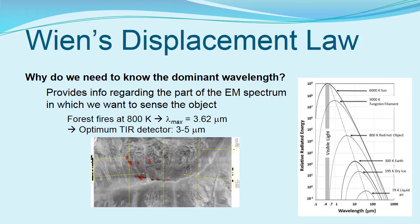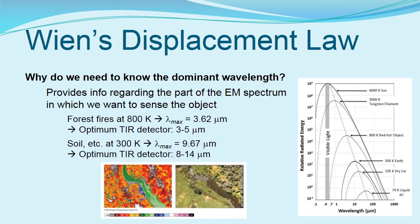A typical forest fire might burn at 800 degrees Kelvin. Using Wien's displacement law, we can determine that the dominant wavelength is 3.62 micrometers, and therefore design our sensor to detect features in that wavelength. Likewise, if we are interested in earth features such as soil, rock, and water, we know that the earth's background temperature is approximately 300 degrees Kelvin. We can then apply Wien's displacement law to see that the earth's dominant wavelength is 9.67 micrometers, and our sensor can then be designed for an appropriate range of wavelengths for sensing earth materials.